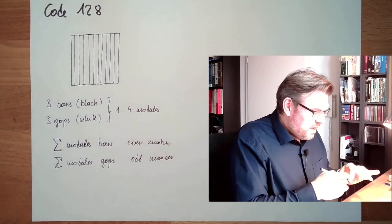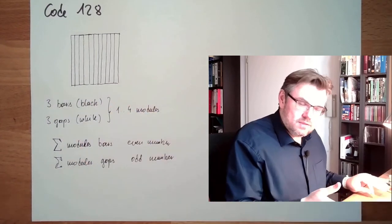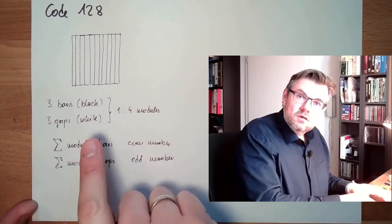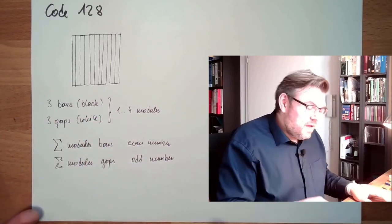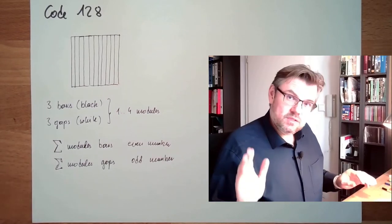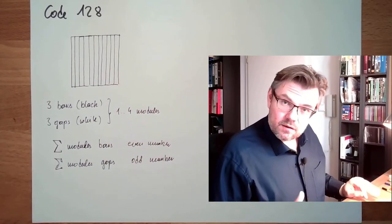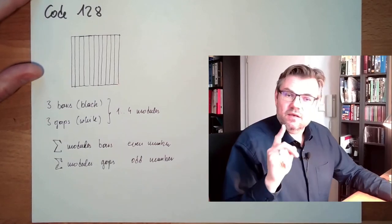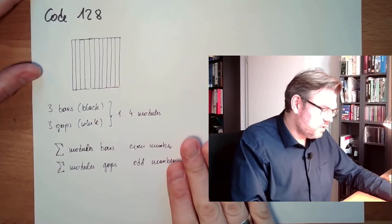This means immediately after I read this, I can check how many modules I found in bars and how many modules I found in gaps. If there is not an even and an odd number, I know I made a mistake and maybe I have to read it again. So this code is self-checking.